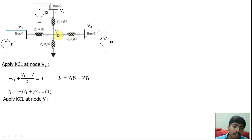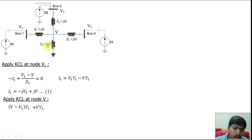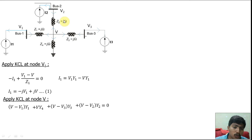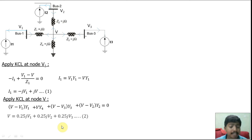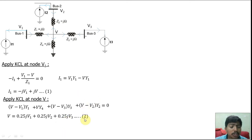Apply KCL at node V. The outgoing currents are: (V − V1)·Y1 + (V − 0)·Y4 + (V − V3)·Y3 + (V − V2)·Y2 = 0. Since Y1 = Y2 = Y3 = Y4 = −j, substituting gives V = 0.25j·V1 + 0.25j·V2 + 0.25j·V3. Substituting this expression for V back into equation 1, we get: I1 = −0.75j·V1 + 0.25j·V2 + 0.25j·V3. This equation now contains only the current injected to the bus and bus node voltages as variables.